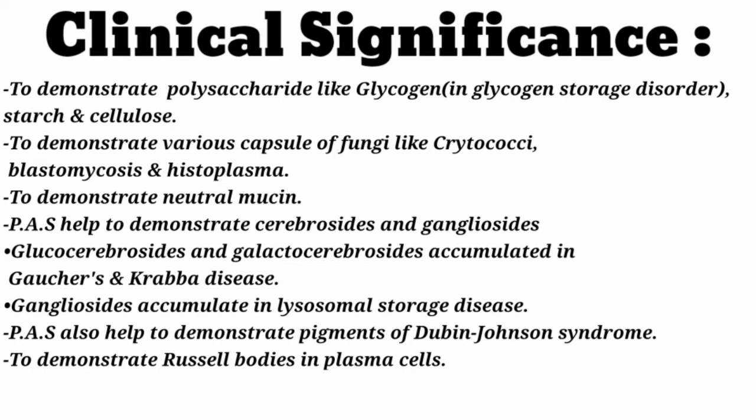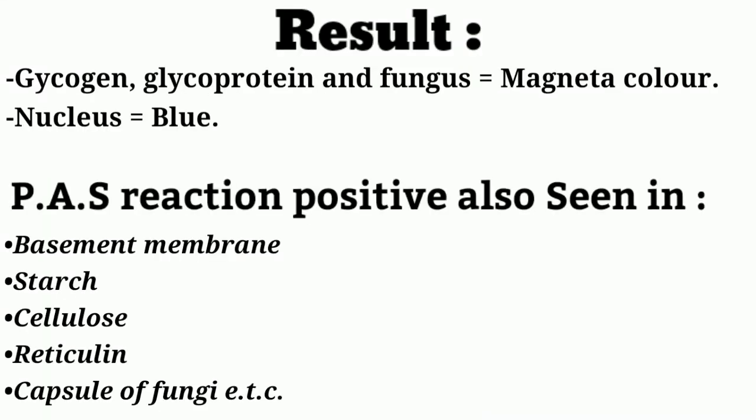PAS stain is used for Gaucher's disease because it can detect cerebrosides. Ganglioside accumulation is seen in lysosomal storage diseases — if a patient has a lysosomal storage disorder, the doctor may refer PAS stain. PAS stain also helps demonstrate the pigment of Dubin-Johnson syndrome and Russell bodies in plasma cells. In PAS stain, glycogen, glycoprotein, and fungi appear as magenta color, and the nucleus appears as blue. PAS reaction is also positive in basement membrane, starch, cellulose, reticulin, and capsule of fungi.